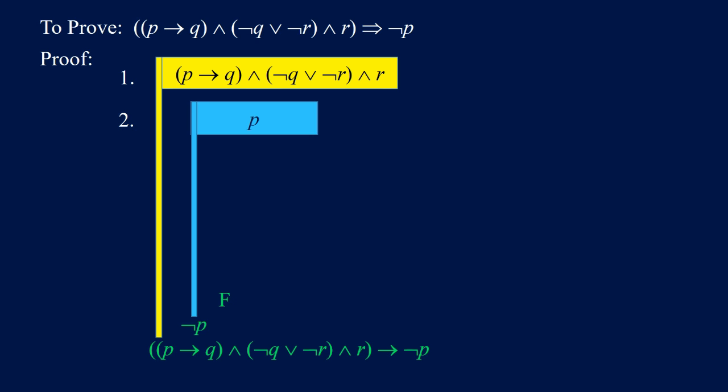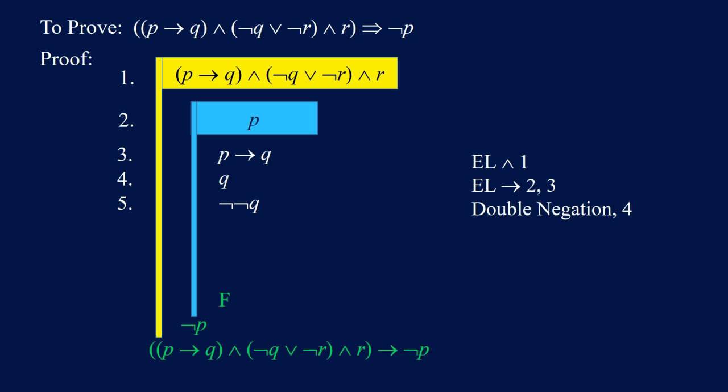To get not R we first need to get not Q or not R from 1, then apply the elimination of OR to get not R. To apply elimination of OR to not Q or not R we need Q. Q occurs on the right side of P implies Q in 1. We get P implies Q by applying elimination of AND, indicating this with 3. We get Q by applying elimination of implication to 2 and 3, indicating this with 4. Then Q is the same as NOT NOT Q by double negation, indicating this with 5.